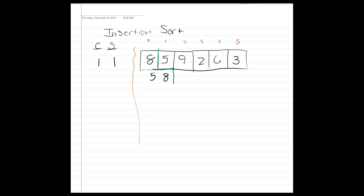The portion to the left of the green line is now the sorted portion of the array. To the right — nine, two, six, and three — is unsorted. We move the index from i=1 to i=2 and look at nine. We compare nine to eight: one comparison, but since nine is not less than eight, there's no swap. So nine stays in place.